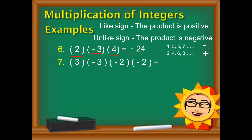Let's proceed with the seventh example. Bilangin natin ang negative: 1, 2, 3. So 3 times negative 3 times negative 2 times negative 2 — tatlo yung negative integers, at ang 3 ay kasama sa odd number. So ang magiging sagot natin ay negative. Multiply na lang natin yung 3 times 3 — that's 9 — times 2, that's 18, times 2 — ang magiging sagot ay 36. Ang minultiply ko na lang ay yung mga numbers, di ko na sinama yung sign kasi ginamit na natin yung rule.